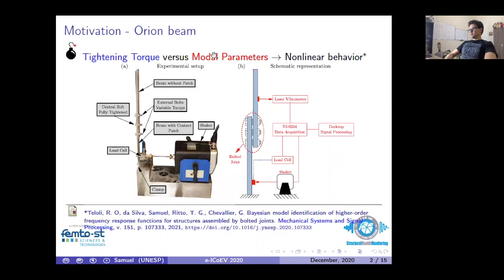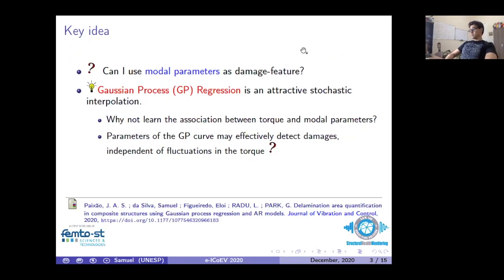Our work's motivation is to observe the behavior of this benchmark of bolted joints, named Auriol beam. Here we can observe this experimental setup. It's composed of two aluminum beams with bolted joints. This connection presents several nonlinear effects induced by contact and mass effects. So monitoring the system's safety by regarding the modal parameters is a complicated task. It happens because the tightening torque and the modal parameters display a nonlinear relation.